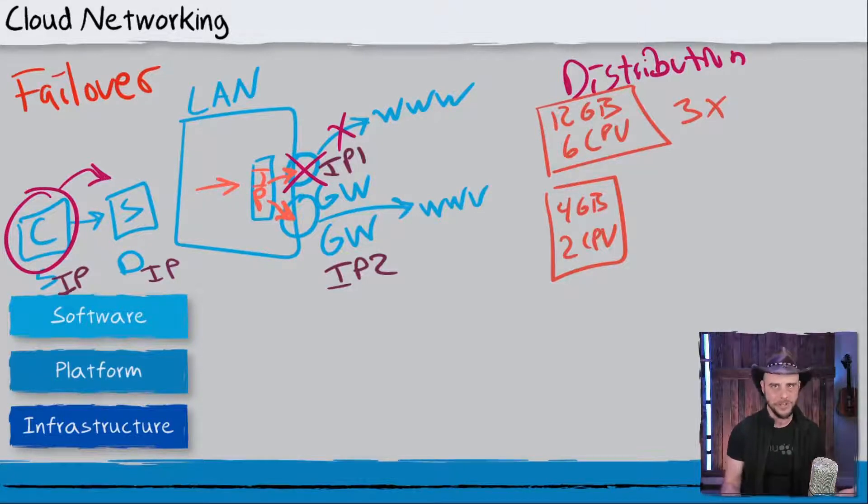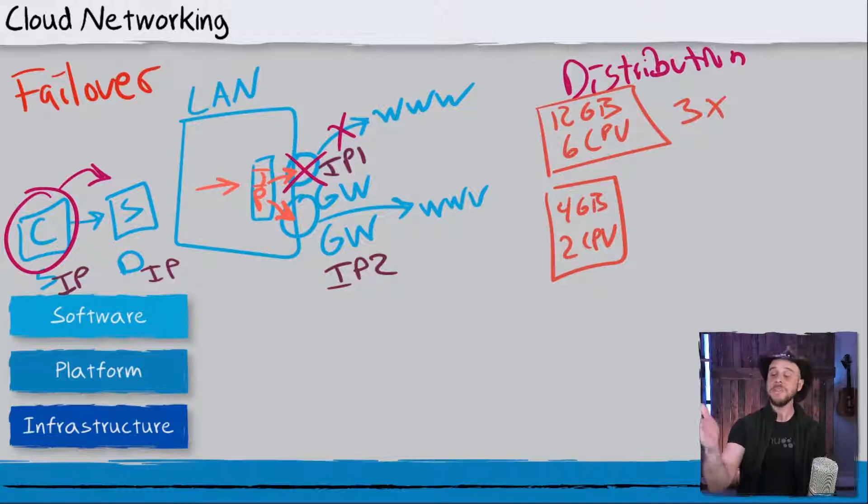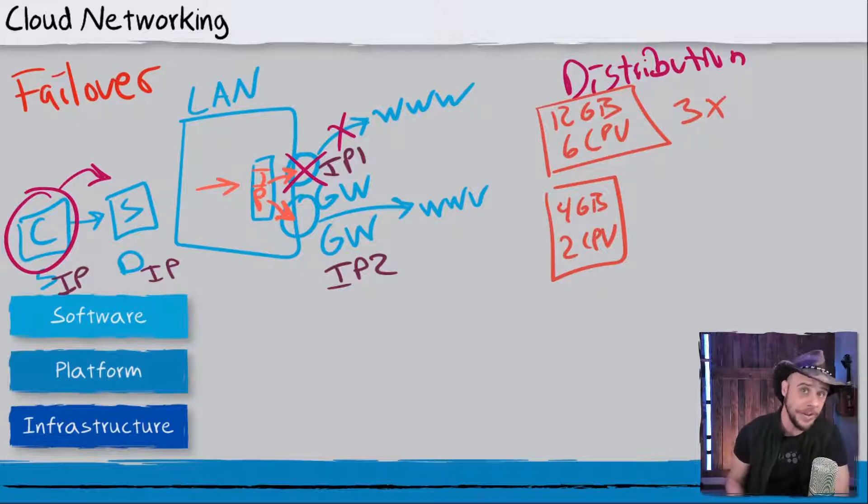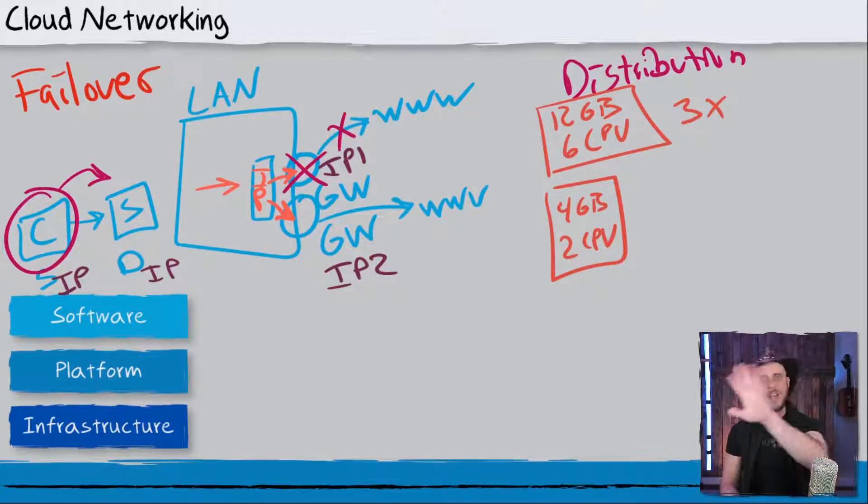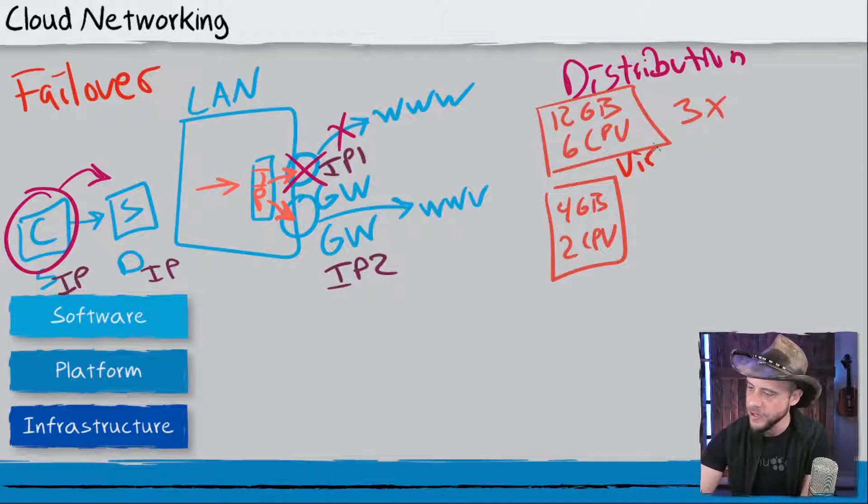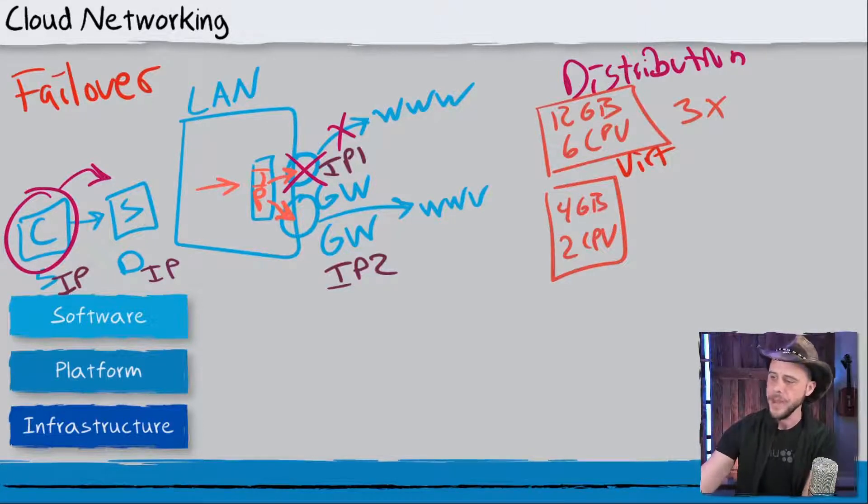The only problem with this, and we call this vertical scaling, it's where you grow the size of the individual system, is that you still only have one single system there. And so even though it's more powerful, if that system fails, you still only have the one, and therefore you're going to need some other system like in this failover model that we were talking about.